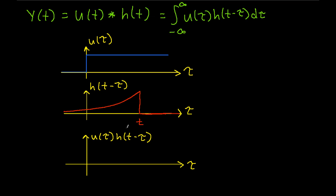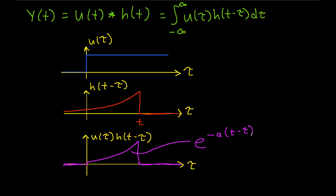Now I need the product of the two. For values of tau where u of tau is 0, the product will be 0. For values of tau where h of t minus tau is 0, the product will also be 0. For other values of tau, I get the product equal to u of tau, which is 1, times h of t minus tau, which is e to the minus a times the quantity t minus tau. My goal is to find the area under this curve by working the integral.